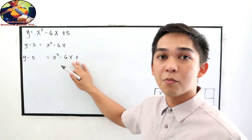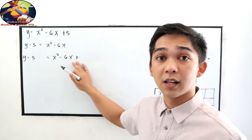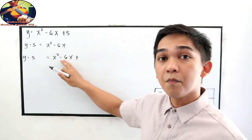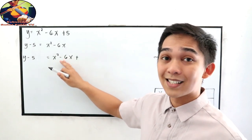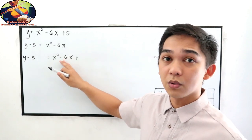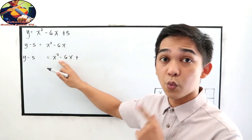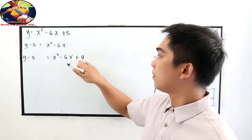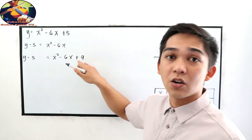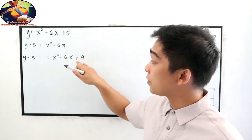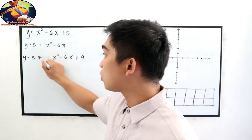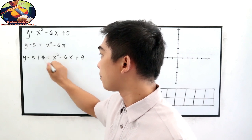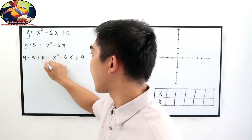So y minus 5 is equal to x squared minus 6x plus what number we need to write as a constant term to make it a perfect square trinomial. Take the middle term divided by 2: 6 divided by 2, then square it — 3 squared — that is 9. We add 9 on the right side of the equation, so we need to add 9 on the left side as well.